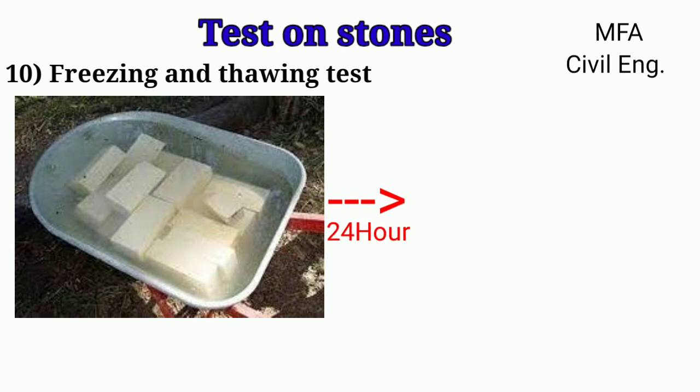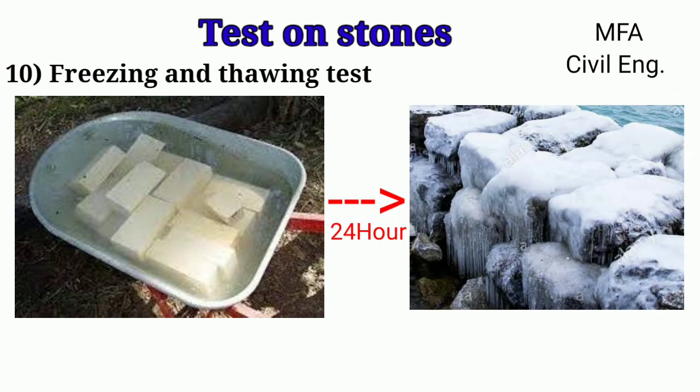Freezing and thawing test: In this test, the stone specimen is kept immersed in water for about 24 hours, then placed in a freezing mixture at −12°C for 24 hours, and then thawed or warmed at atmospheric temperature. This process should be conducted in a shed to prevent any effect due to wind, sunrays, and rain. The whole process is repeated several times and the behavior of the stone is carefully observed.